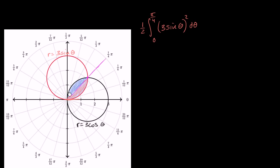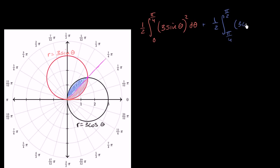And then this blue region right over here is going to be one half times the definite integral from pi over four to pi over two of three cosine theta squared d theta. That's because as we go from pi over four to pi over two, we're bounded by the black circle, r is equal to three cosine theta.